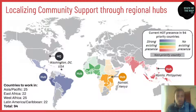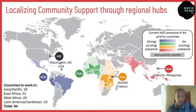To help communities overcome these barriers, the Humanitarian OpenStreetMap Team is opening regional hubs to localize community support, since each region faces unique challenges. The hubs for Eastern and Southern Africa and Asia Pacific have already started work, with two more planned for West Africa and Latin America. The hubs will engage and support local mapping communities in up to 94 countries.